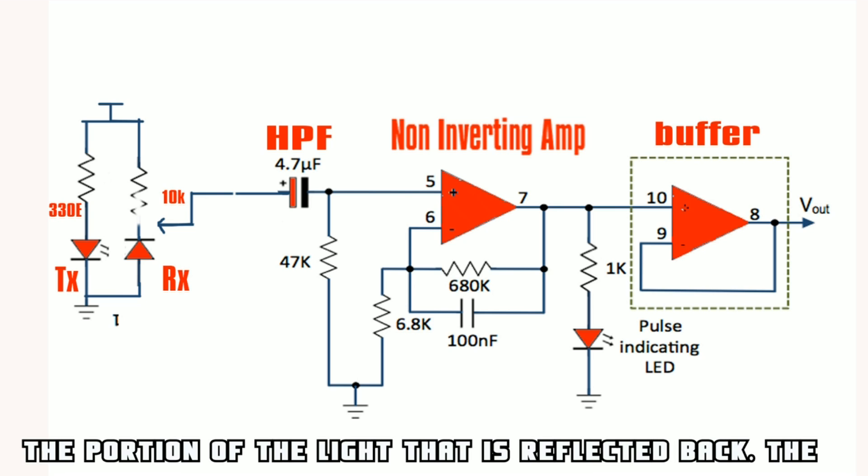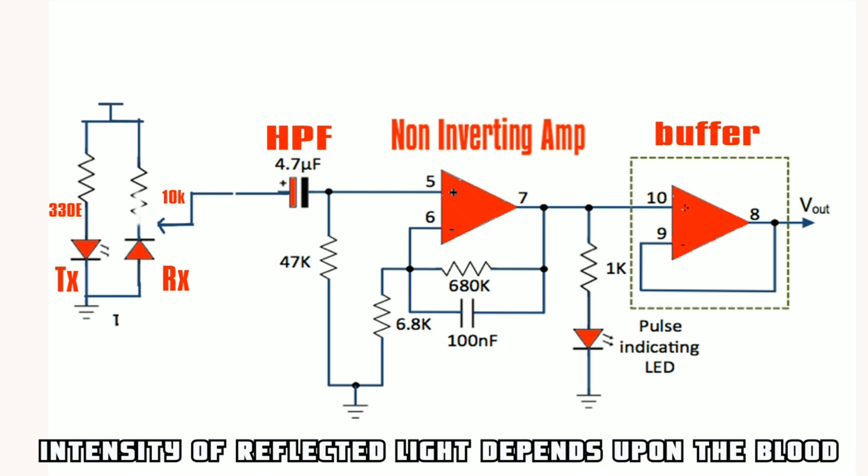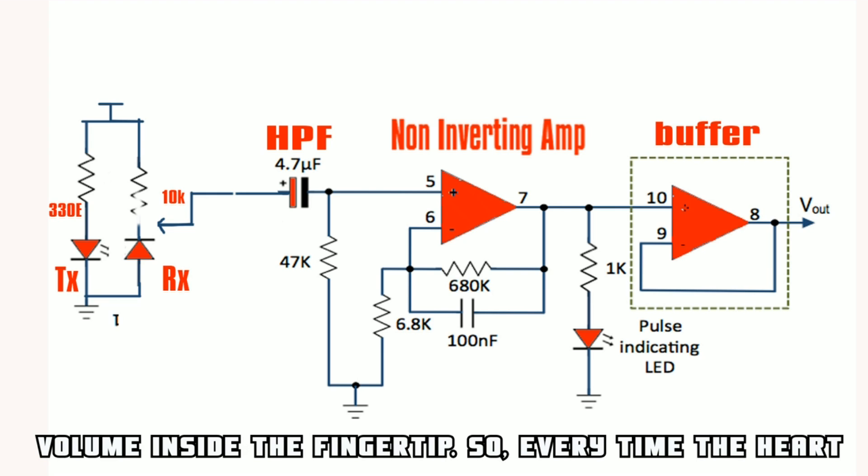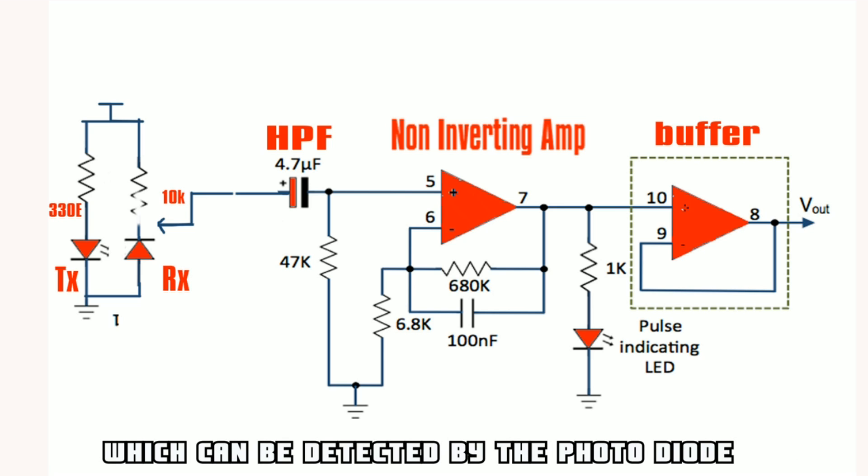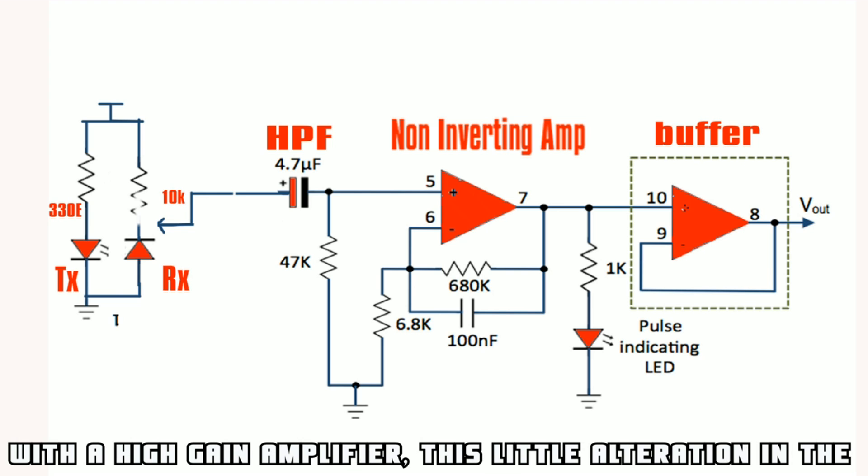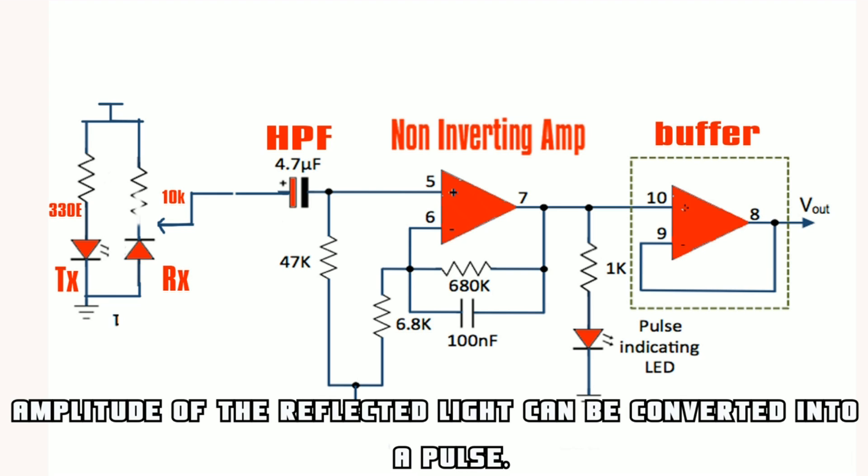The photodiode senses the portion of light that is reflected back. The intensity of reflected light depends upon the blood volume inside the fingertip. So every time the heart beats, the amount of reflected infrared light changes, which can be detected by the photodiode. With a high gain amplifier, this little alteration in the amplitude of the reflected light can be converted into a pulse.